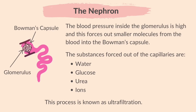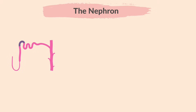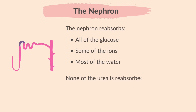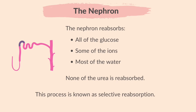Some of the filtrate — the substances that were forced out of the glomerulus — will be reabsorbed back into the blood further down the nephron, since they are useful. This is called selective reabsorption. As the filtrate moves along the nephron, the nephron reabsorbs all of the glucose, some of the ions, and most of the water back into the blood. None of the urea is reabsorbed.